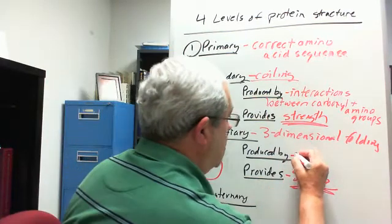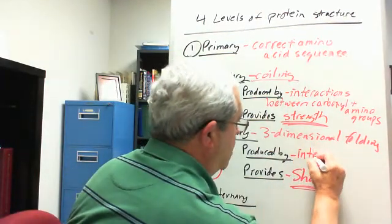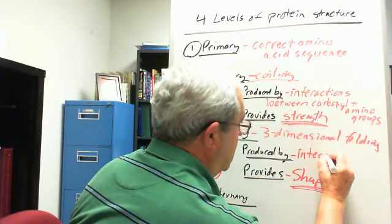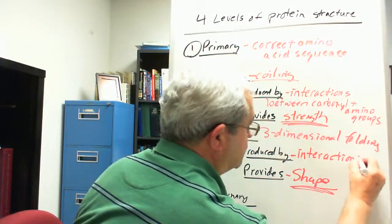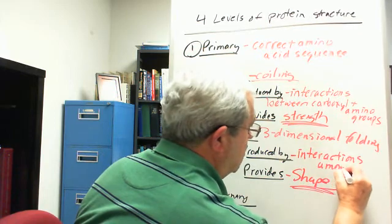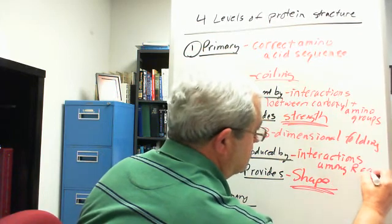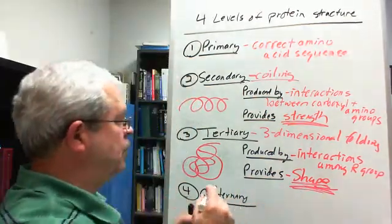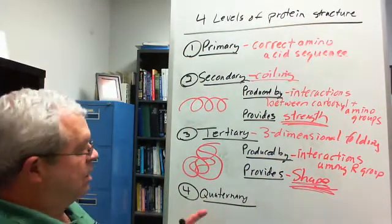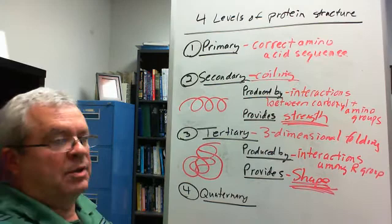So that and some other things go together to produce this tertiary structure, this three-dimensional folding. So all I'm going to do is put interactions among R groups. And that provides that magic word shape. Quaternary structure provides more complex shape.